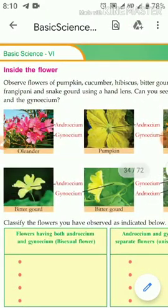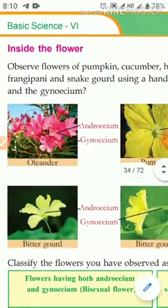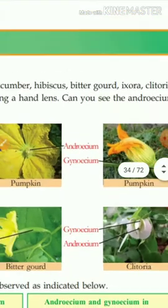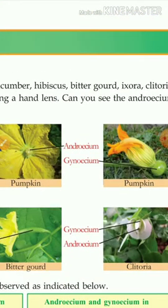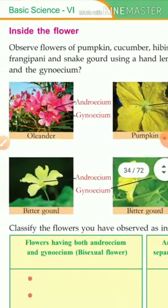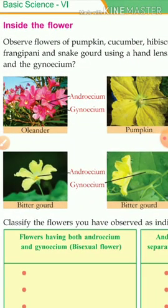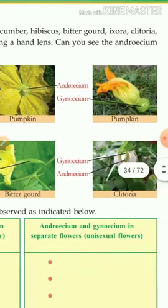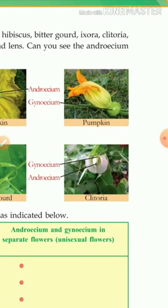Now we check it. The first picture is the oleander flower, which contains both androecium and gynoecium. Now consider pumpkin — it has two flowers: one flower contains androecium only, and another contains gynoecium only. Similarly, bitter gourd has androecium in one flower and gynoecium in another flower.